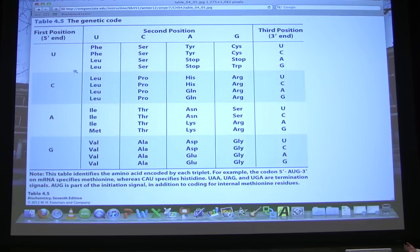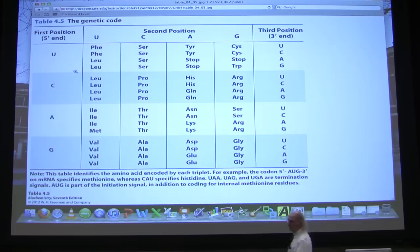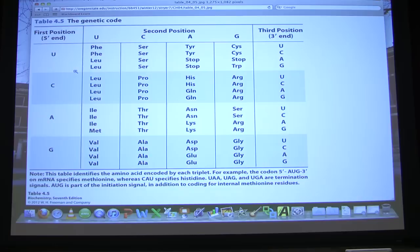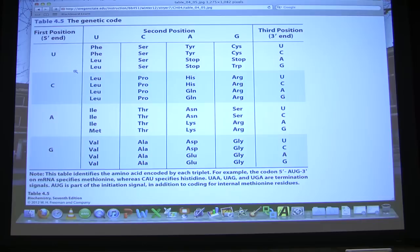If we look, for example, at CU-anything — that is C-U-U, C-U-C, C-U-A, C-U-G — we see that they all specify leucine. What that tells us is that the third position for most of the genetic code is the least important position. It's where we talk about having wobble, referring to the fact that for many of the codons, the third position can be almost anything. But if it's not almost anything, it is certainly biased in terms of purines versus pyrimidines.